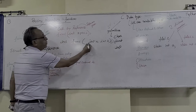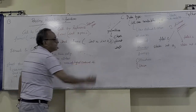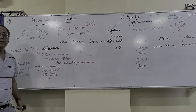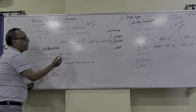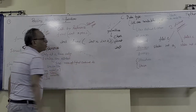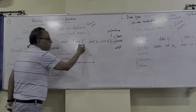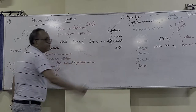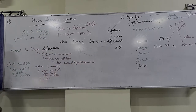Whenever you see a star in front of a parameter, that means it is a pointer. In call by value, you are giving a copy, and in the function body there is a return statement.